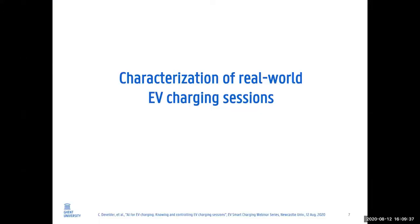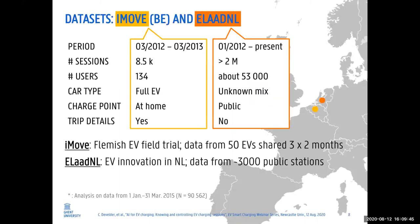The aim of our work, which we started a few years ago, was to characterize how EV charging sessions look like in the real world, based on two datasets. The first one we mostly collected ourselves — it was one of the first field trials in Flanders, the northern part of Belgium, where people got to use a car for about two months before it was transferred to another family. The charging sessions at their homes were recorded, resulting in a relatively small dataset of about 8,500 charging sessions with a limited number of users.